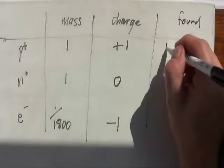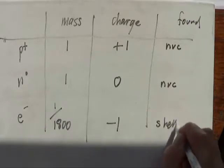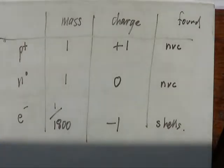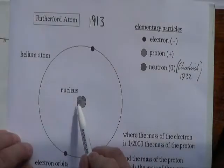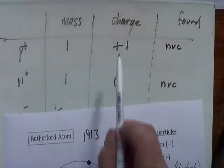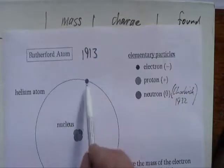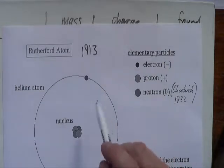Protons and neutrons are found in the nucleus, and electrons are found in the shells orbiting the nucleus. If we look back at this diagram, the nucleus overall must be positively charged because it contains the protons — protons are positive. It also contains neutrons which have no charge. Electrons then orbit this nucleus and are negative.